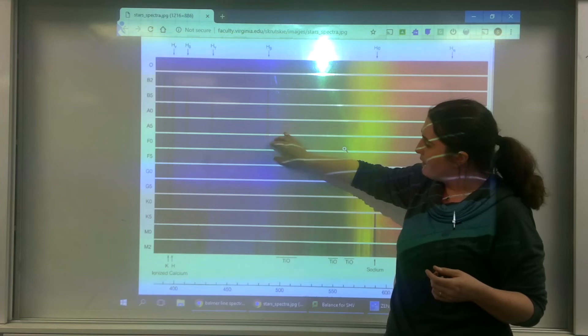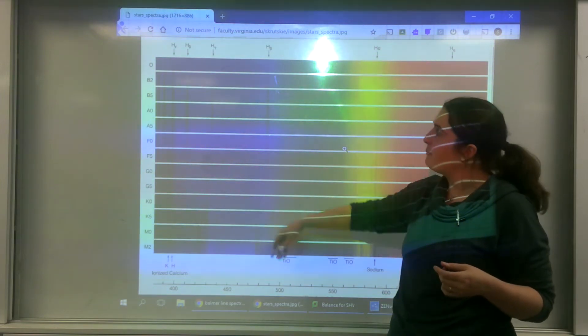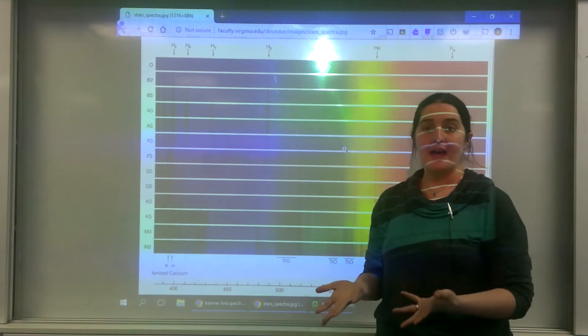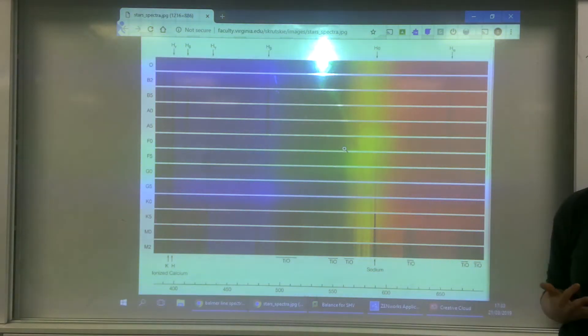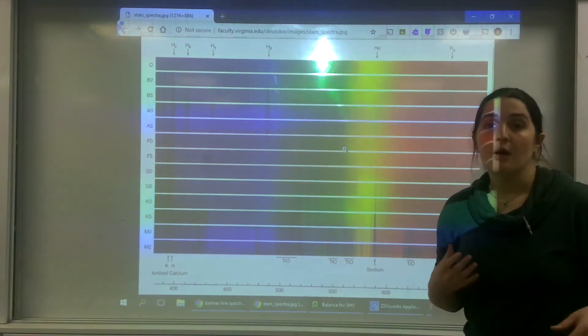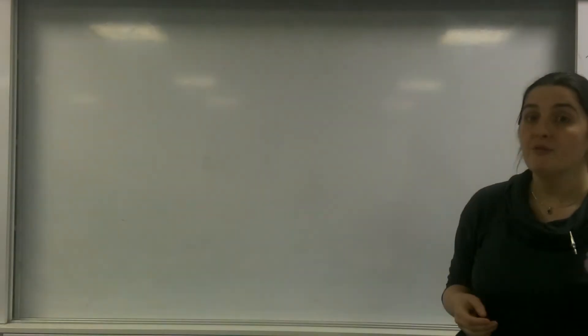It starts to get dimmer, and then when I come to F and G and K and M and O, these lines are not there, and that is because this idea of Balmer Lines being associated with hydrogen.